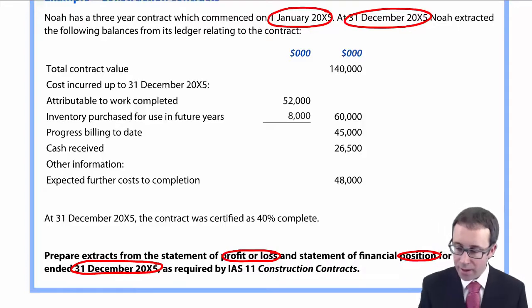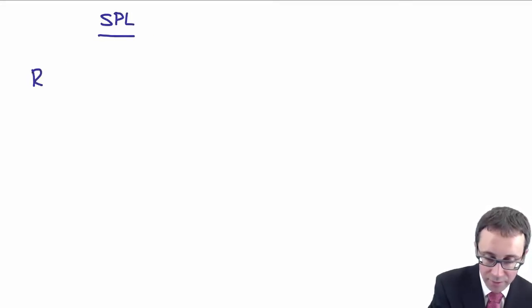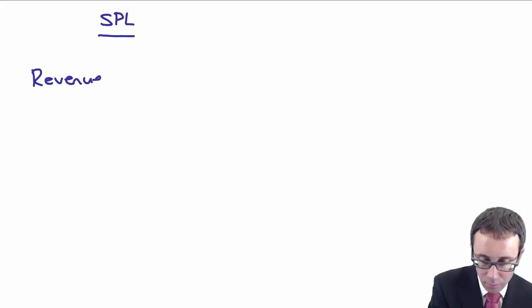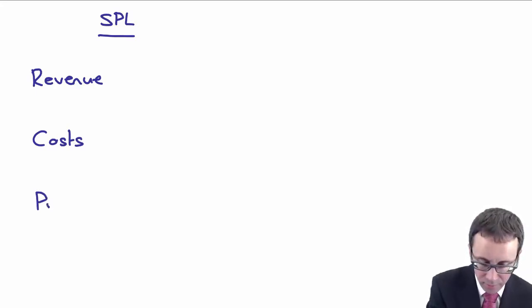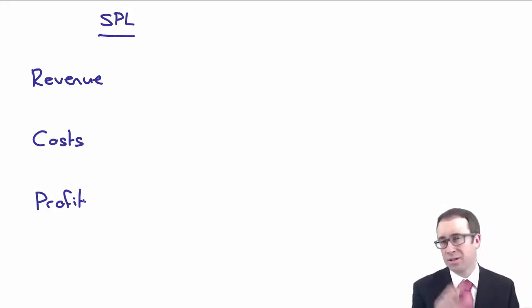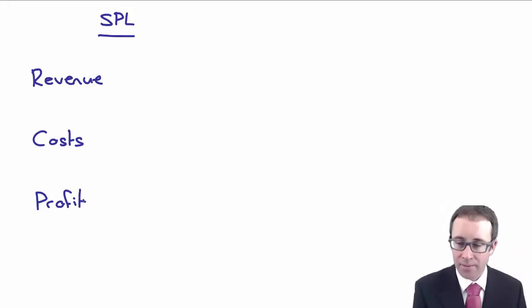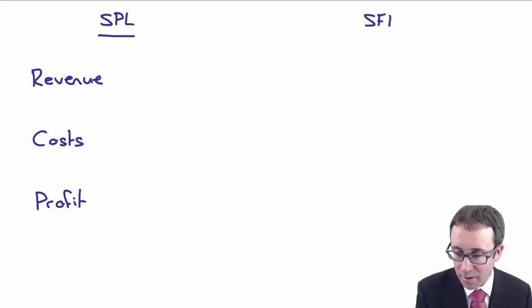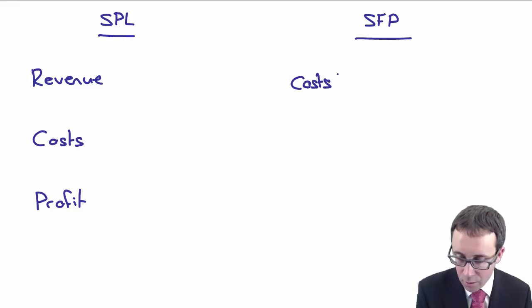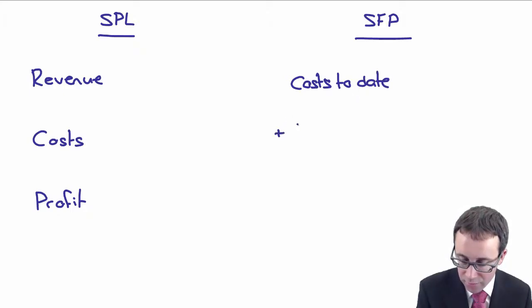So thinking about my pro formas, I'll just split my page in two — statement of profit or loss on the left, looking at revenue and costs assuming it's a profit. And on the right, looking at the statement of financial position: you've got your costs to date, add on your recognised profits to date.